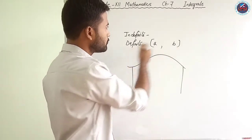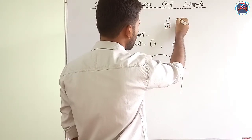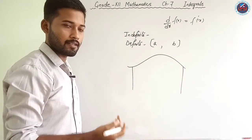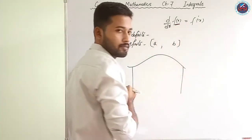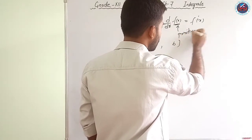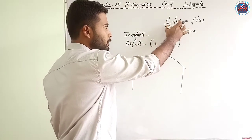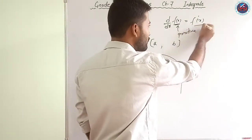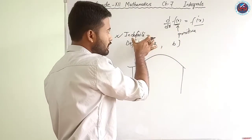In indefinite integration, in our previous chapters we found the derivative of a function — that is, d/dx of f(x) is equal to f'(x). In indefinite integration, we find this function, called the primitive. If we are able to find the derivative of f(x) and get f'(x), then what will be the anti-derivative of f'(x)? It will be f(x).